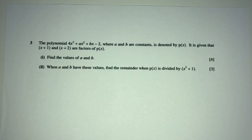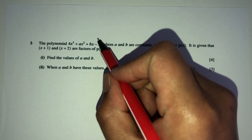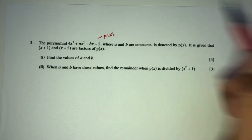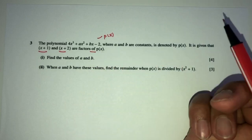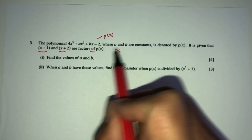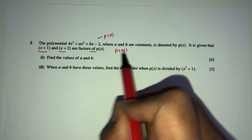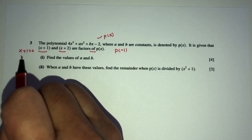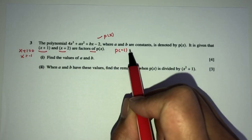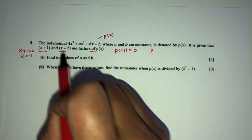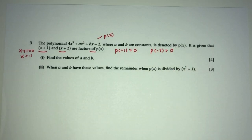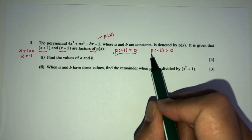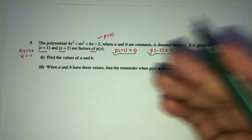Now, let's move on to question number 3. Here we have a polynomial, this equation right here, defined by P of x. It is given that two expressions are both factors of P of x. That means when P takes the value of minus 1 — because when you equate the factor to 0, the value is minus 1 — the remainder will be 0. And for the other factor, the value will be minus 2, same logic, it has to be 0. Using that information, let's form two equations to find the values of a and b.